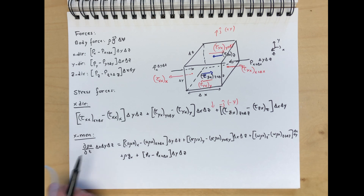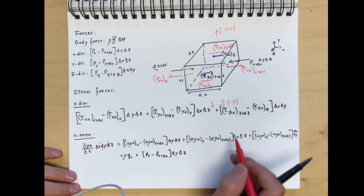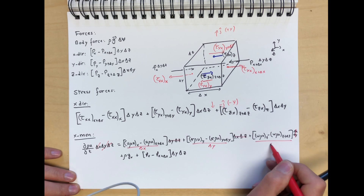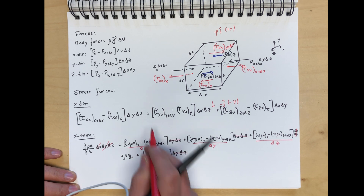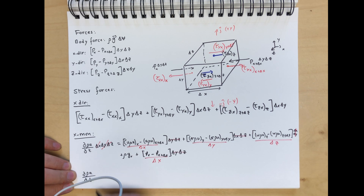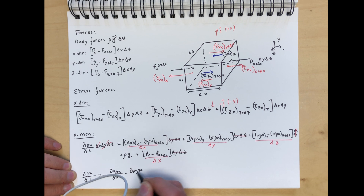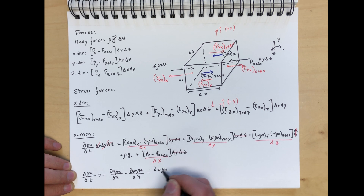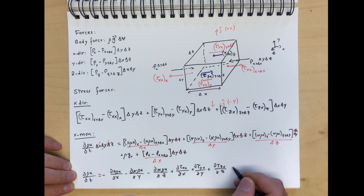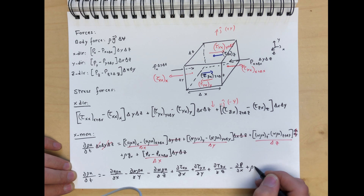Dividing by the volume ΔxΔyΔz and shrinking to an infinitesimal element, we obtain the x-momentum equation: ∂(ρu)/∂t = −∂(uρu)/∂x − ∂(vρu)/∂y − ∂(wρu)/∂z + ∂τxx/∂x + ∂τyx/∂y + ∂τzx/∂z − ∂p/∂x + ρgx.